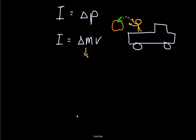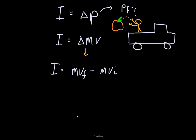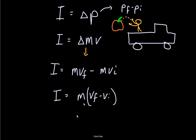So what delta actually represents is m times v-final minus m times v-initial — delta notation just means final minus initial. So we could say final momentum minus initial momentum, and then factor out the mass to get impulse equals m times (vf minus vi). So impulse, as long as mass isn't changing, is what changes the velocity of a mass.